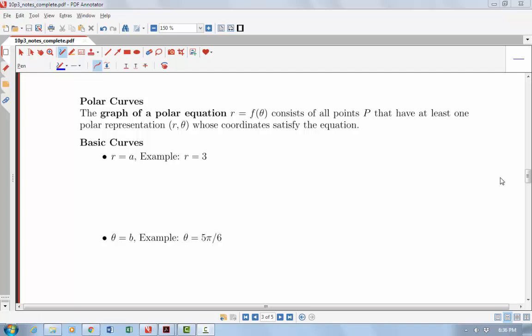In this video, we're going to be looking at polar curves. Now that we have an idea of how to plot polar coordinates, we can talk about a curve consisting of all those different polar coordinate points. When we're talking about the graph of a polar equation, a polar equation will be r equals f of theta, and that will consist of all points P that have at least one polar representation whose coordinates satisfy our equation.